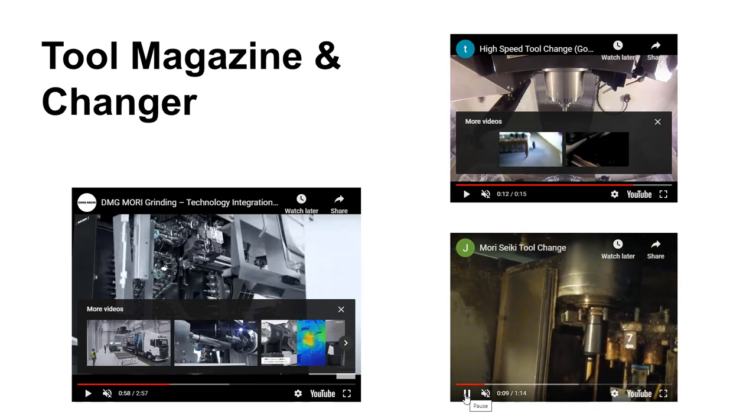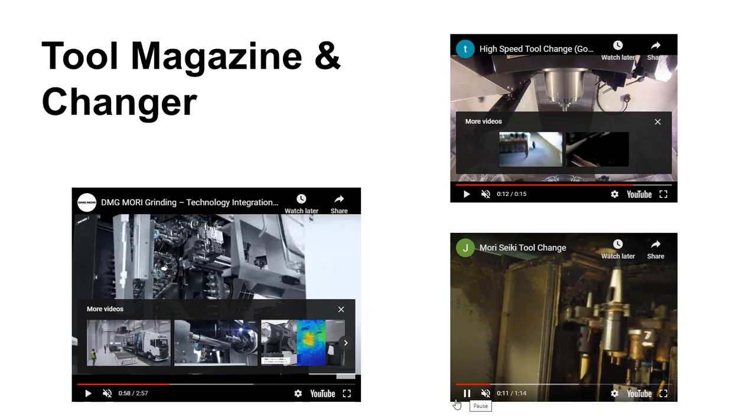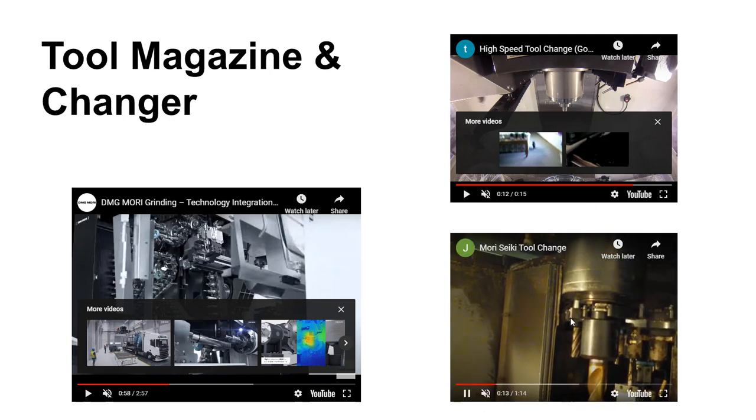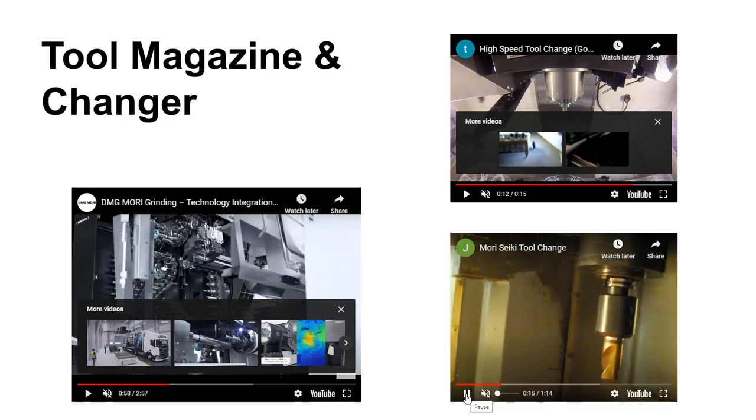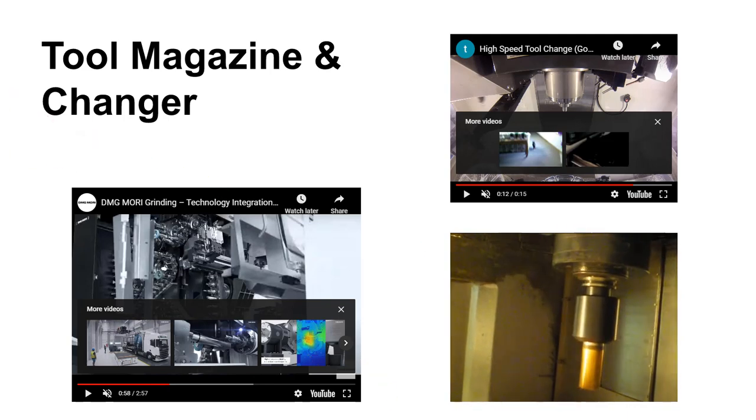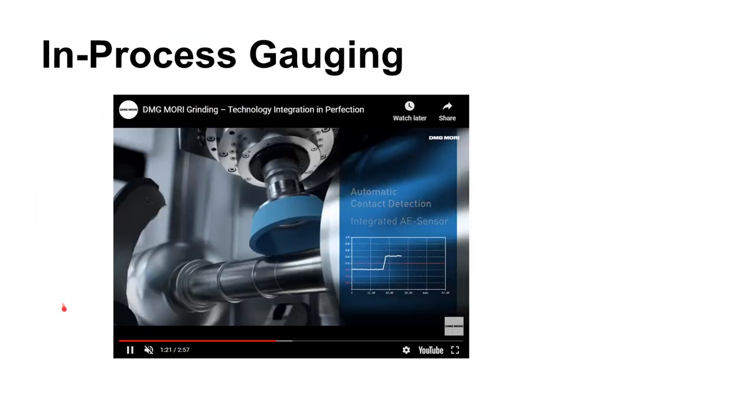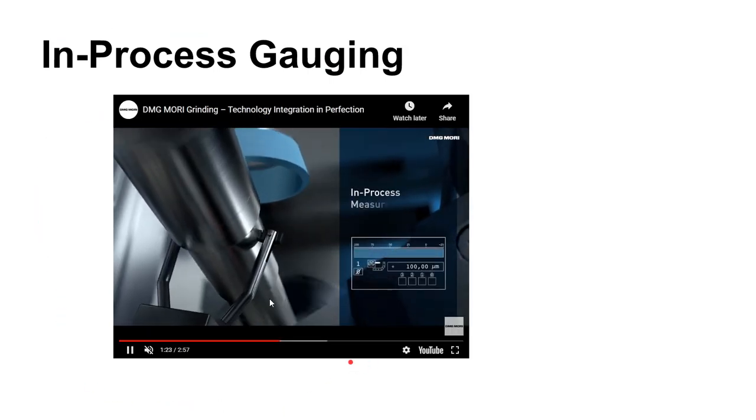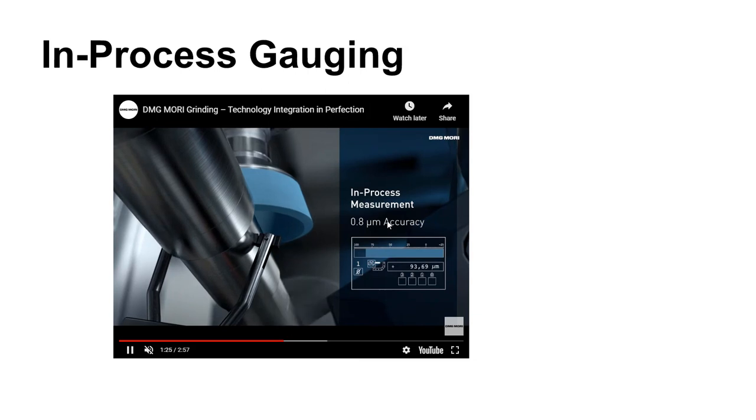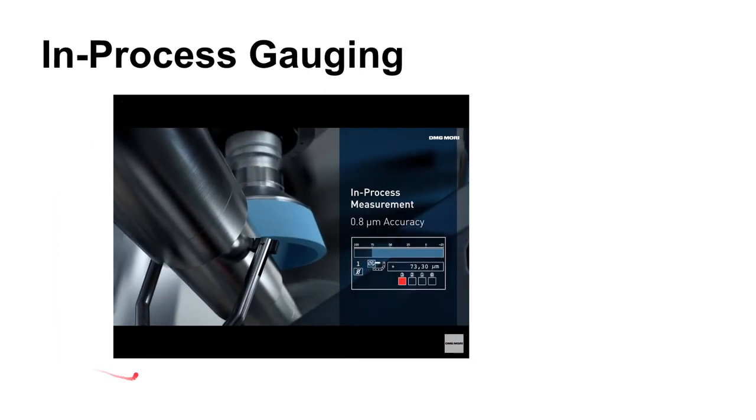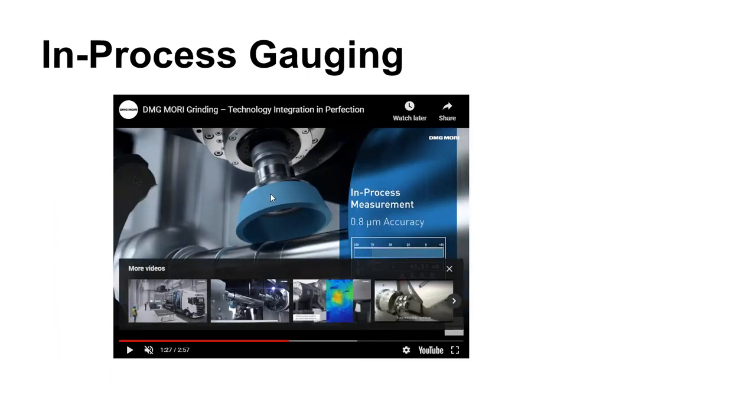You can also do in process gauging where you go in and physically measure the part as you're machining it. And so this is a little grinding operation and they're going in and actually measuring the part to verify that it's approaching the nominal or the target size.